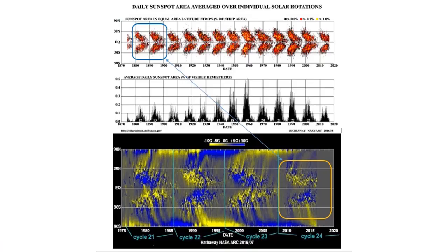Daily sunspot averaged area, solar rotations, butterfly diagram. Bottom right is where we are, top left is 1880. Nice match on that.